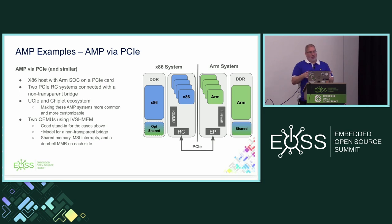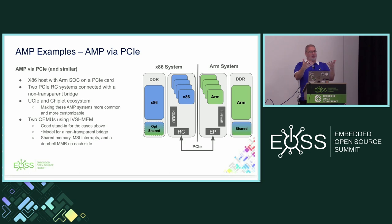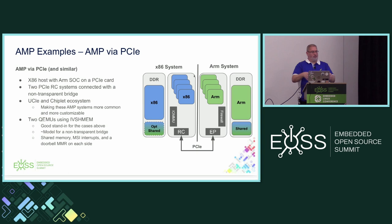To simulate this, we use two instances of QEMU. QEMU supports a peripheral called IVSHMEM (inter-VM shared memory) that appears like a PCI card to both instances, but provides shared memory between them and doorbell mechanisms — those doorbells end up as MSIs on the other side. With those two QEMU instances, you can simulate this kind of system right on your desktop.